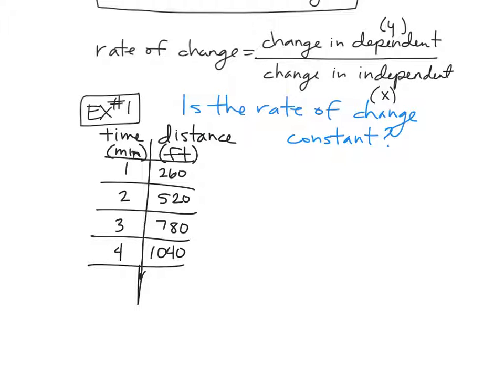So the way that we check this is we say we're going to check the change in distance because that's my dependent and put that over my change in time, my independent for this particular problem. How do you find the change in something? How do I find the change in my distance from here to here? You subtract it.